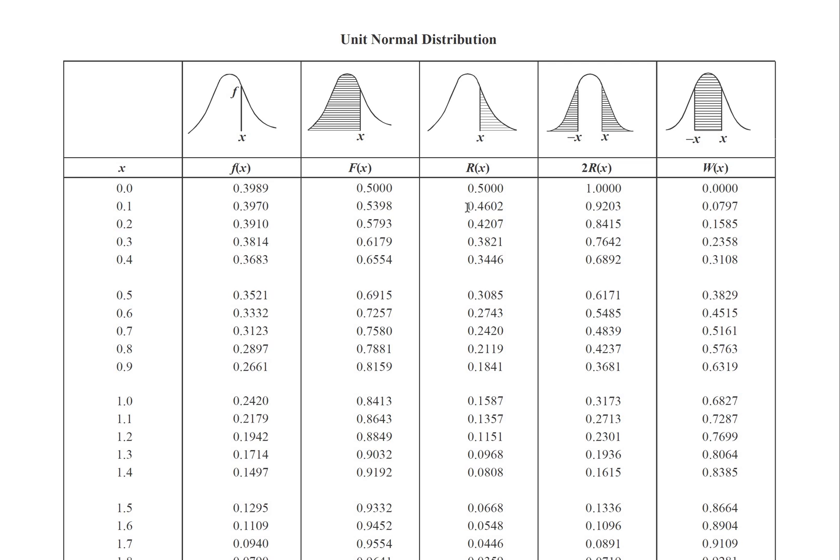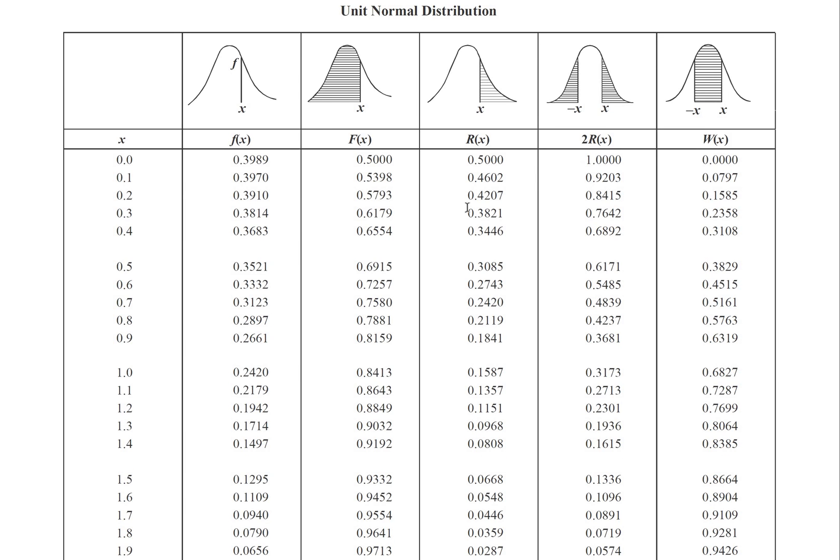which is just the opposite. It's the probability that z is greater than our random variable, and we are going to be using this R(x) column to solve our problem.